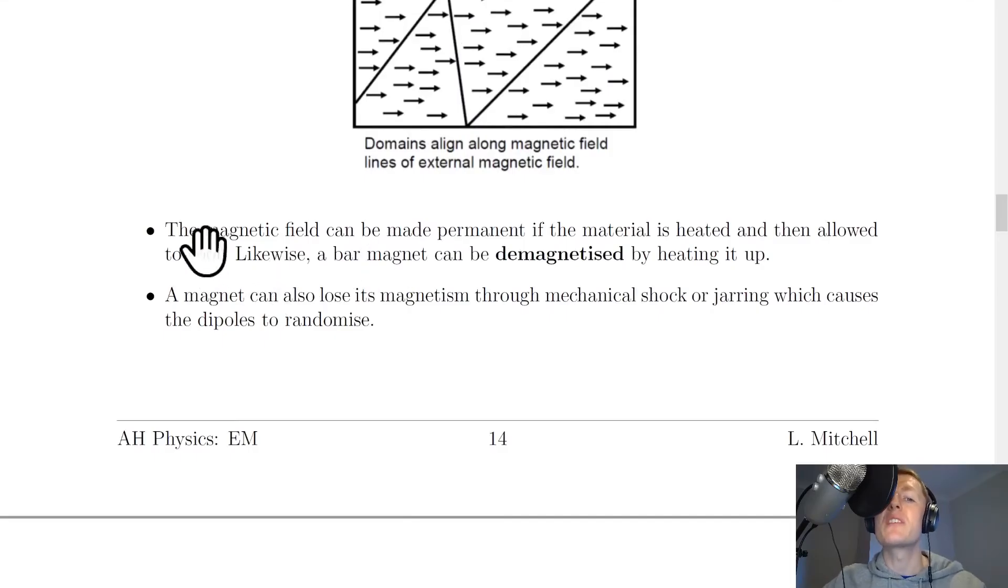Going back to the notes now it says that the magnetic field can be made permanent if the material is heated and then allowed to cool. Likewise a bar magnet can be demagnetised by heating it up. A magnet can also lose its magnetism through mechanical shock or jarring which causes the dipoles to randomise.